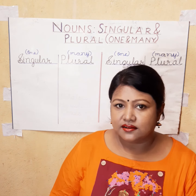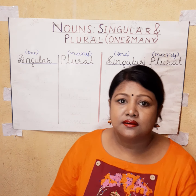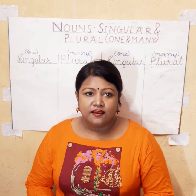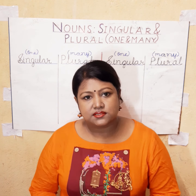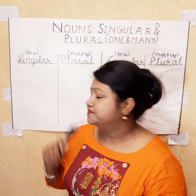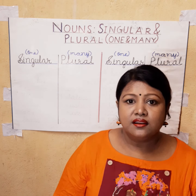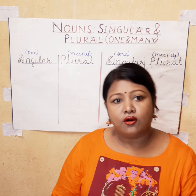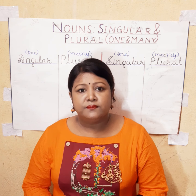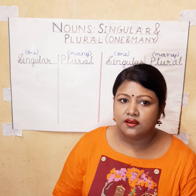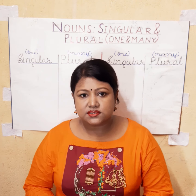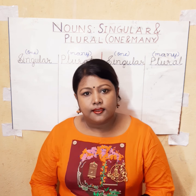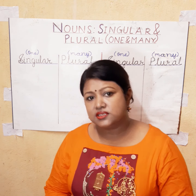In this class, we will learn about nouns that can name one thing or more things, which is singular and plural nouns — or one and many. There are nouns which mean one person, place, animal or thing. The noun meaning one is called a singular noun. There are nouns which mean more than one person, place, animal or thing. The noun meaning more than one is called plural.